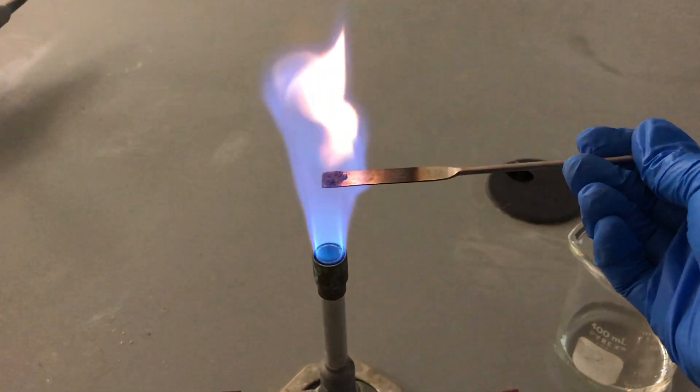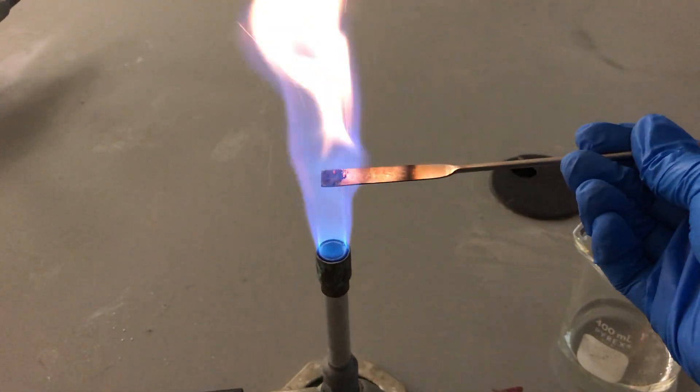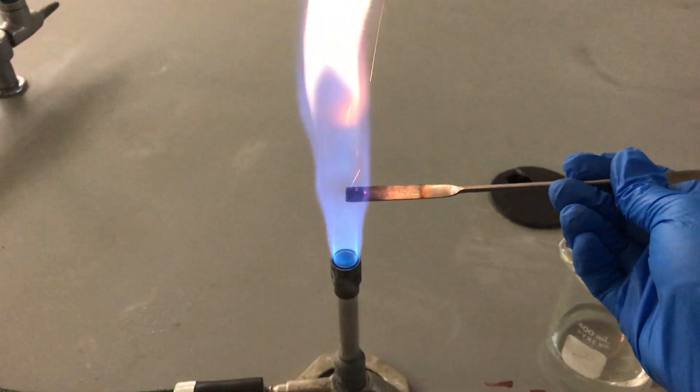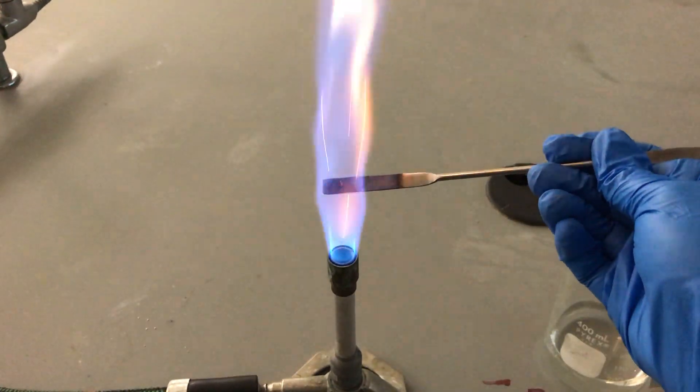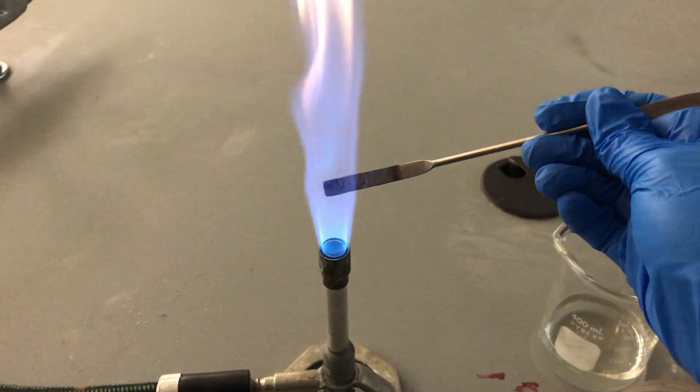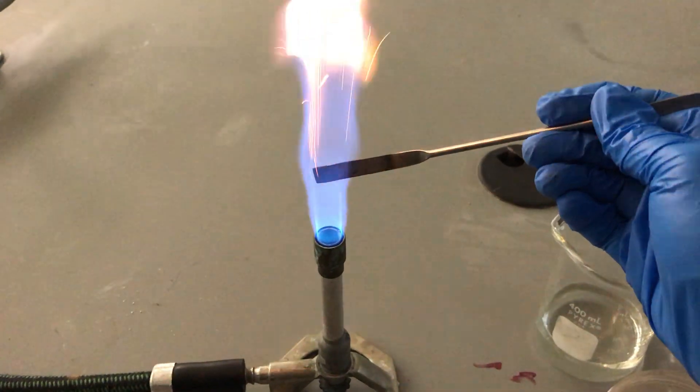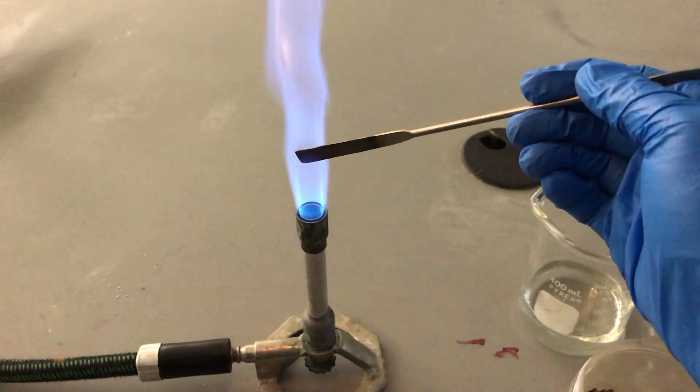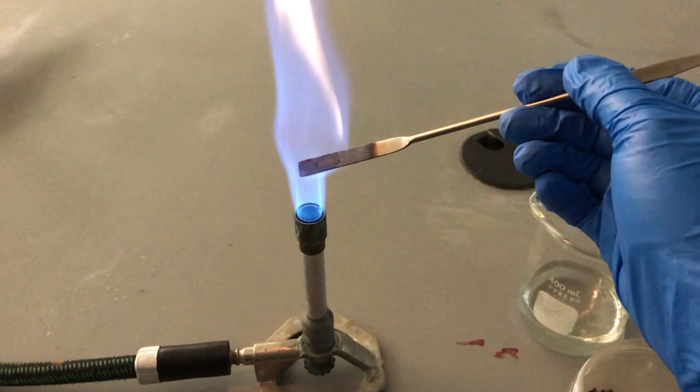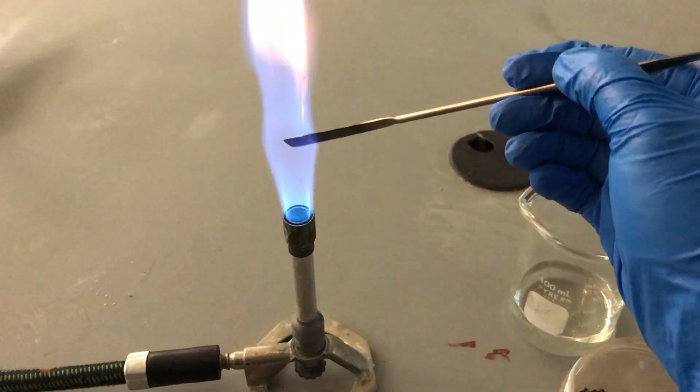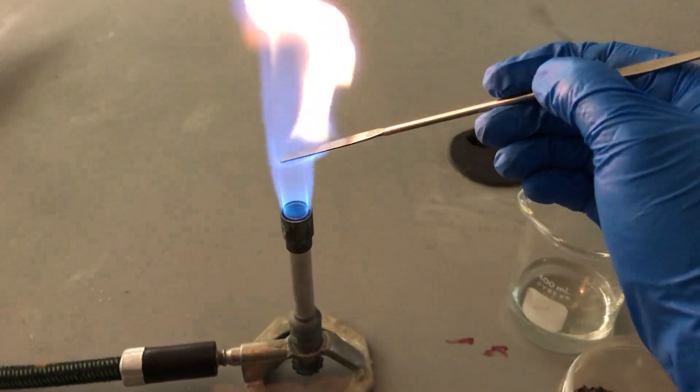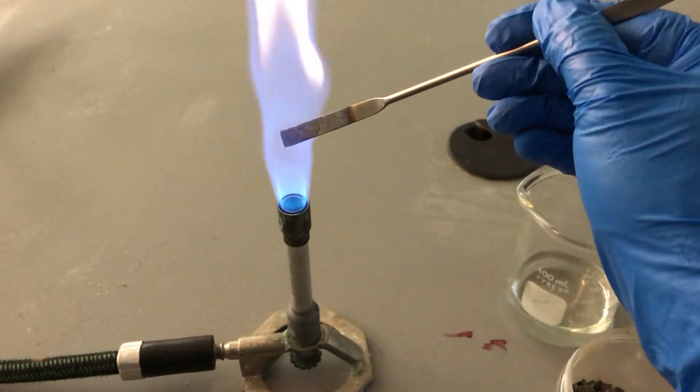Once we do that we are going to introduce it to the flame. And if you look at it closely you can see the flame itself is kind of an orange color and there's lots and lots of sparkles coming off of our sample. And orange and sparkles indicate, well, I'll let you decide that when you look at our soil key.